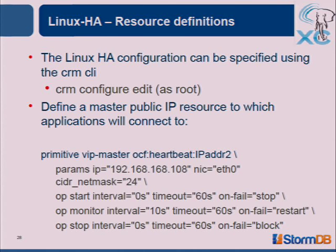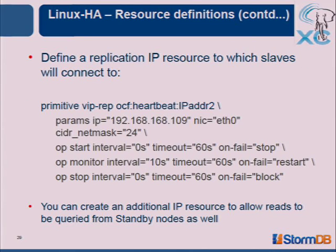The most important activity is the monitoring activity — this is how Pacemaker will keep on monitoring your resources so it knows when there is an issue and can take relevant action. Going back to the diagram, the slaves would want to connect to a different IP address — we don't want to mix public traffic and replication traffic. So you define another resource for replication with the same parameters: IP, which NIC to run on, start, monitor, stop. You can also allow reads from standby nodes.